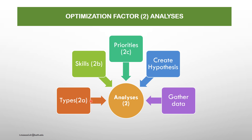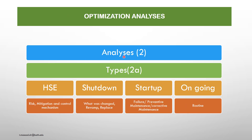The types of analysis to complete the optimization process are: first, HSE — to determine risk, mitigation, and control mechanisms, health and safety involvement; second, shutdown — what was changed, revamp and replacement activities; third, startup, failure, preventive and corrective maintenance; fourth, carrying out ongoing routine activities to deliver as planned. These four analyses constitute the detailed analysis required to carry out the optimization process.